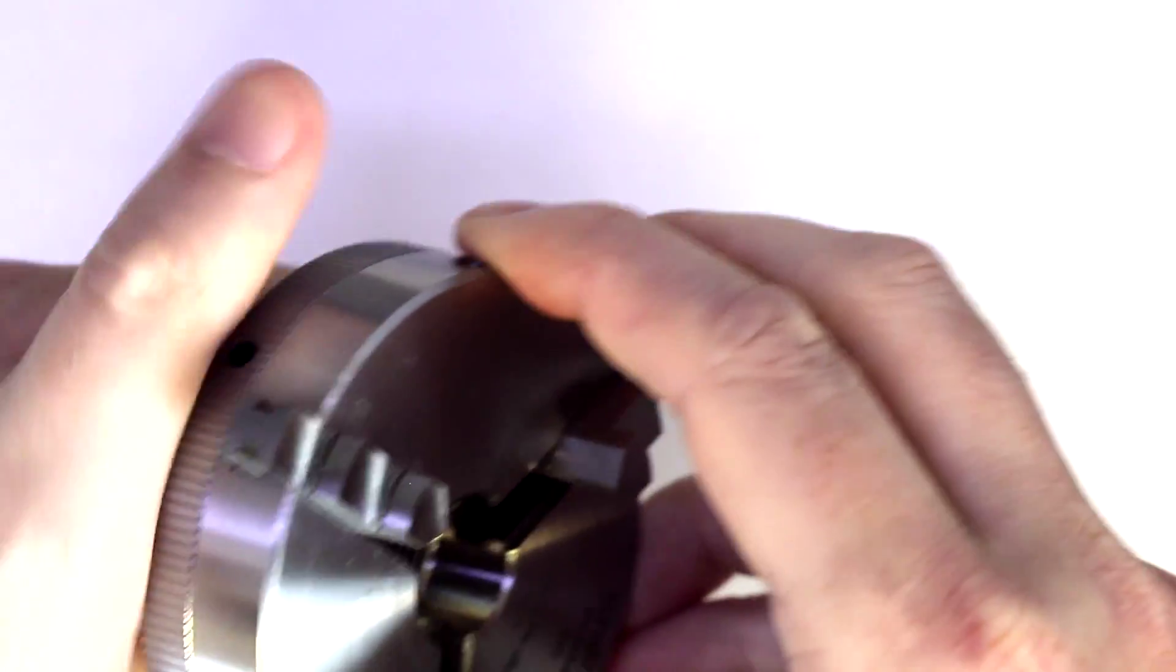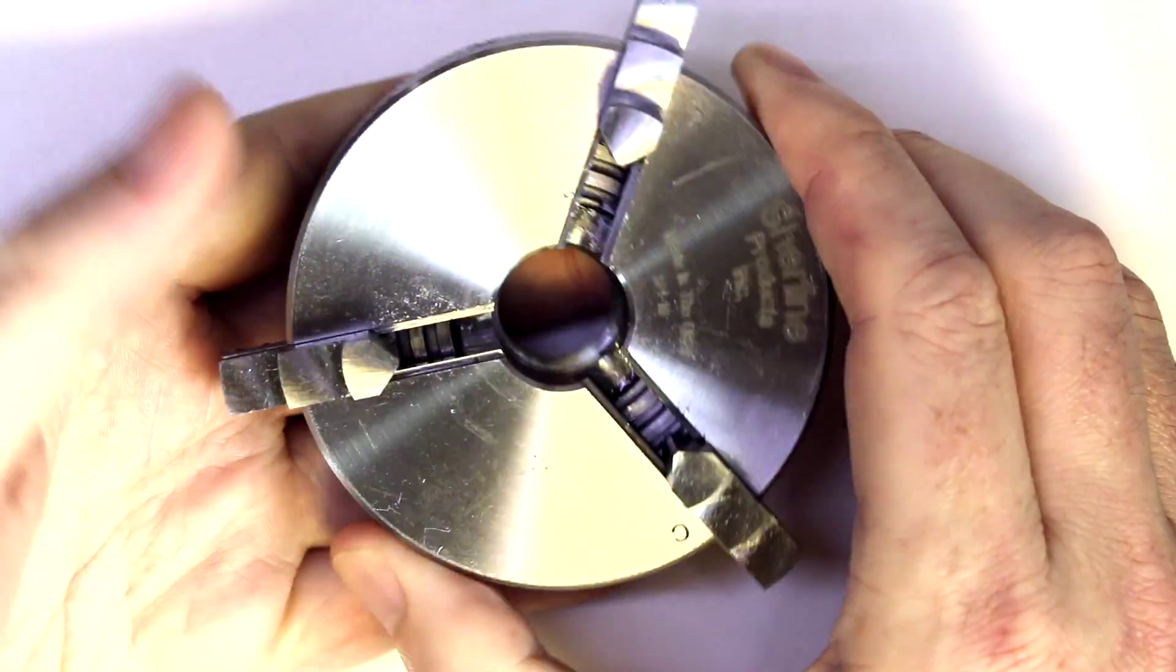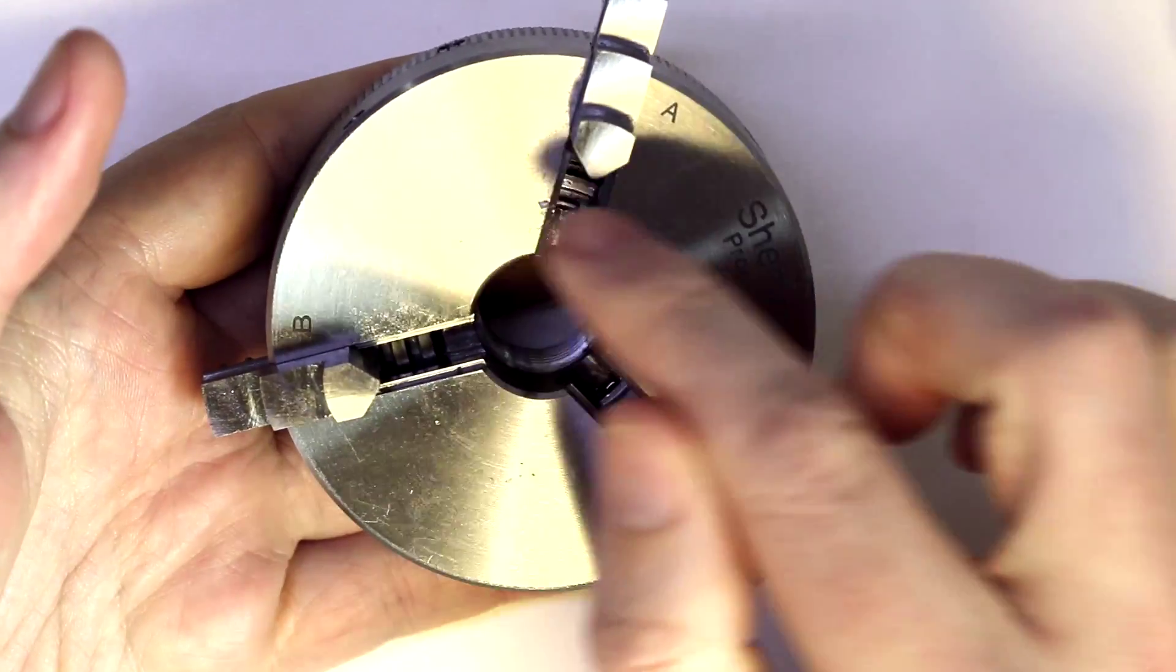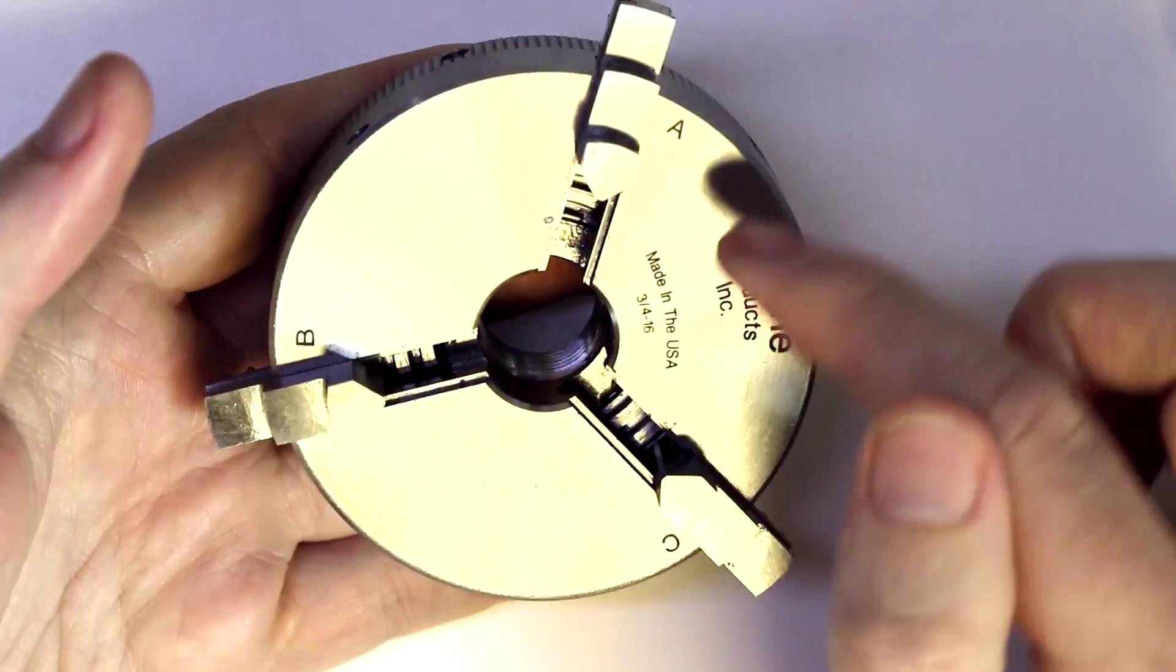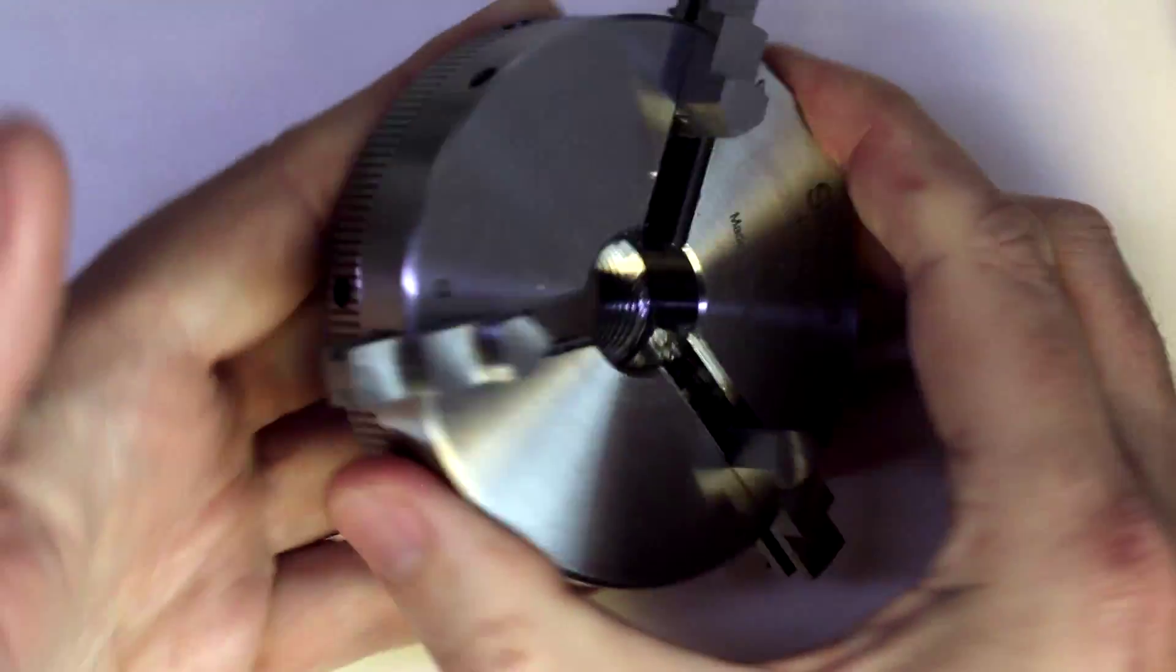But as we do extend them out, we'll start to see how the chuck works. And that on the inside, we have these concentric rings like a screw thread that engage on the teeth of the jaws.